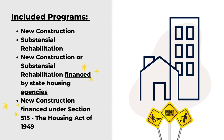The first one: new construction; substantial rehabilitation; new construction or substantial rehabilitation financed by state housing agencies; new construction financed under Section 515 of the Housing Act of 1949 — those are the Section 8.515 properties; loan management set-aside program; disposition of HUD-owned projects; and last but not least, Section 2028.